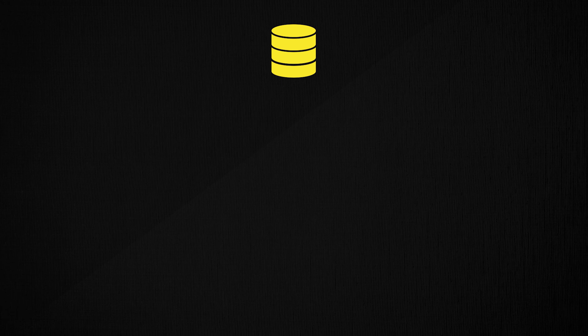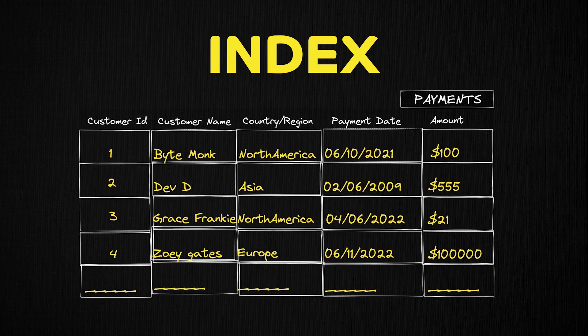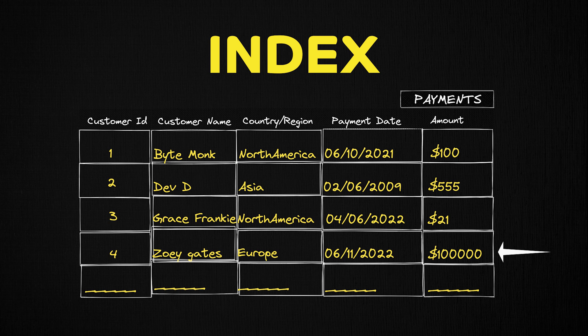That's all you need to know about ACID for system design interviews. Let's talk about the second most important property of relational databases in system design: indexes. To understand database indexes, let's use the same payments table example. In the payments table, we have customer name, amount, and many other fields. If I have to search for the customer who paid the maximum amount, I would have to go through each row sequentially one by one. As you can imagine, if it's a million-record table, it's going to take a significant amount of time because it's a sequential or linear search.